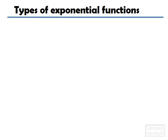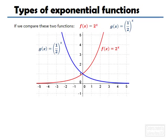So, there are different types of exponential functions, let's look at them. Let's compare these two. 2 to the power of x, and 1 half to the power of x. If I plot them, this is what they look like. You see, one of them keeps going up, that's the red one, and the other one keeps going down closer to zero.